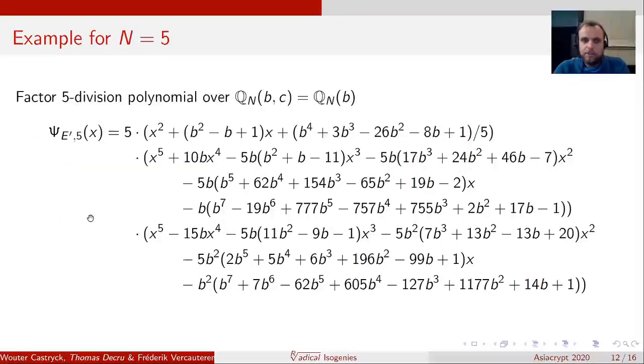Let's take a look at the example for N equals 5. This is a factorization of the 5 division polynomial over the general field, where we have not yet adjoined the fifth root of B. So it factors as a quadratic piece and two quintic pieces. This quadratic piece we're not really interested in. The roots of this are the x-coordinates that generate dual isogeny. Recall that I said we wanted to go from E to E prime to a new curve. However, if we would use one of these roots as the x-coordinate of a kernel generator, we would end up at E again.